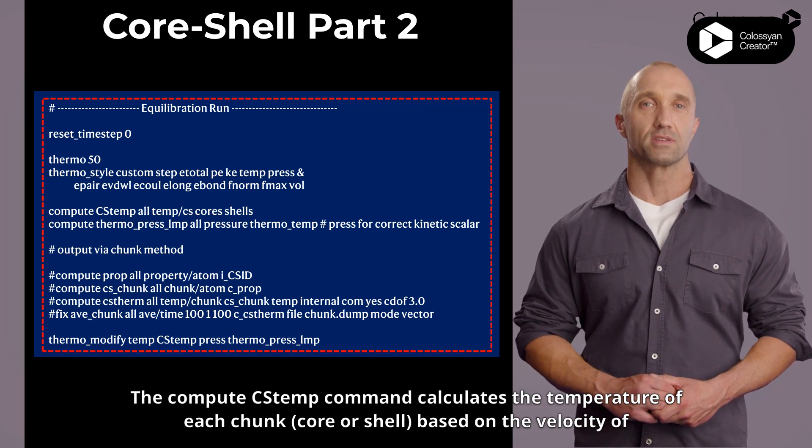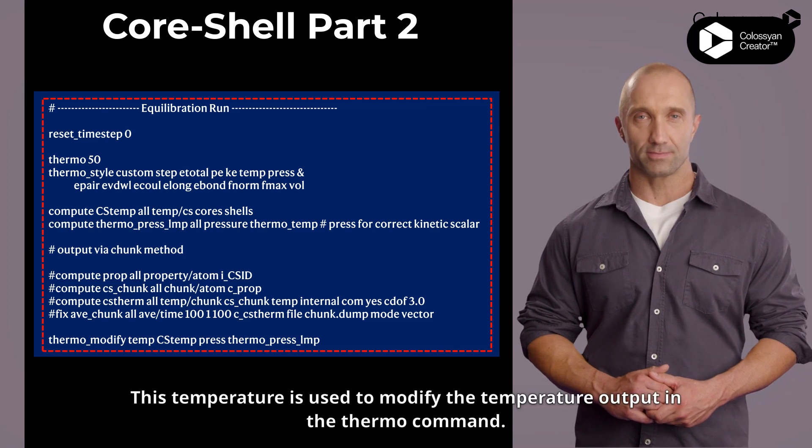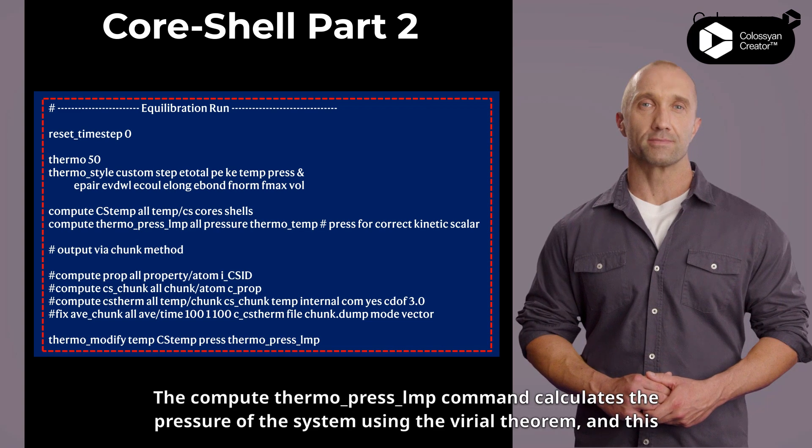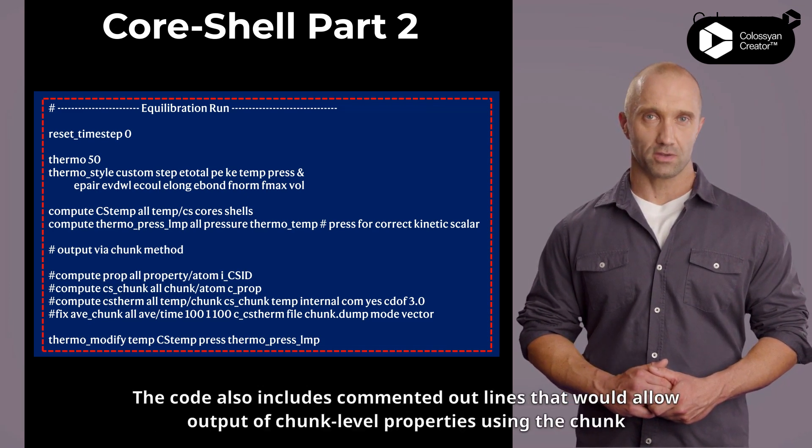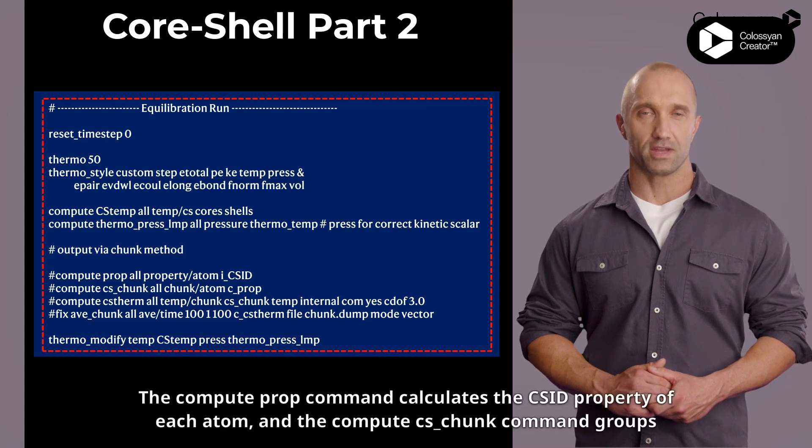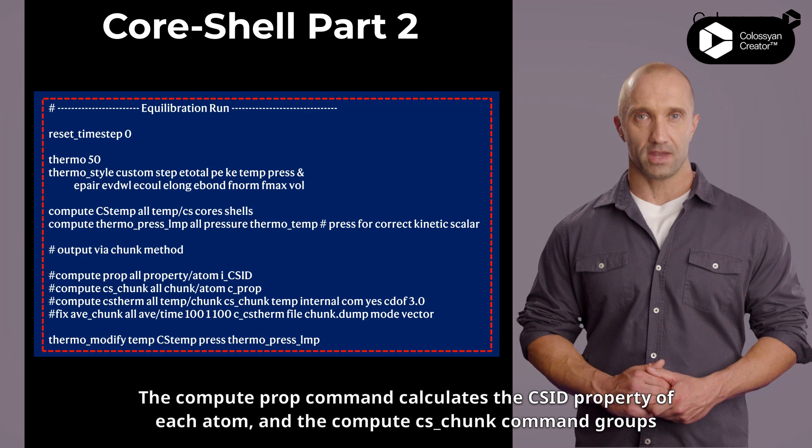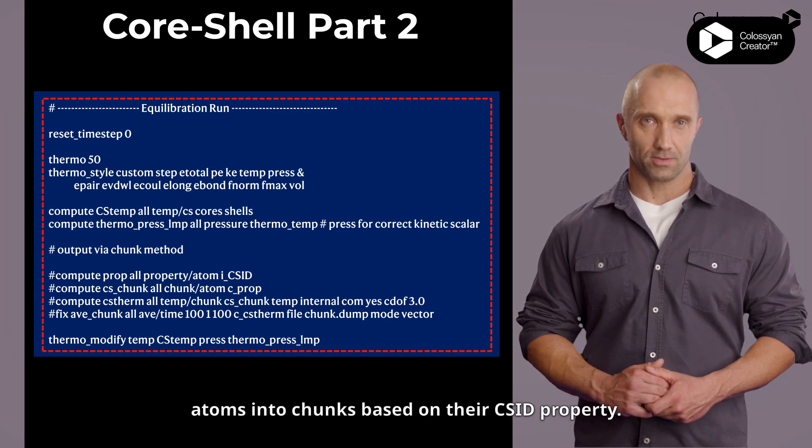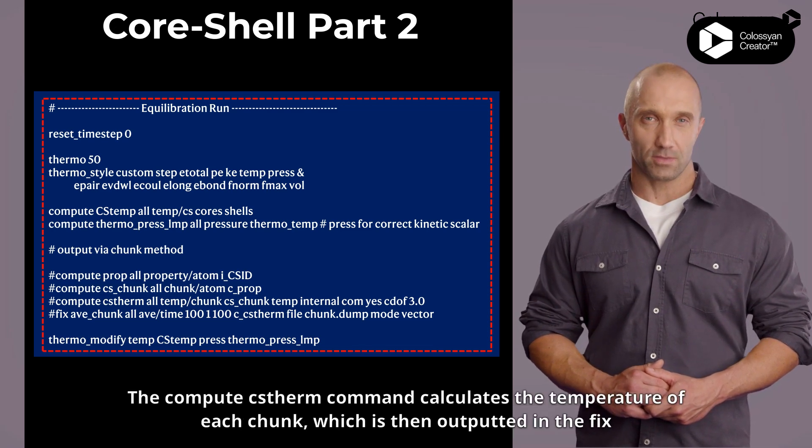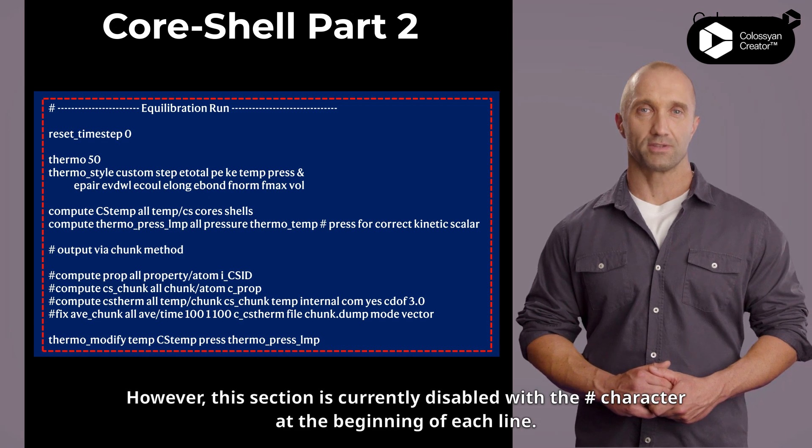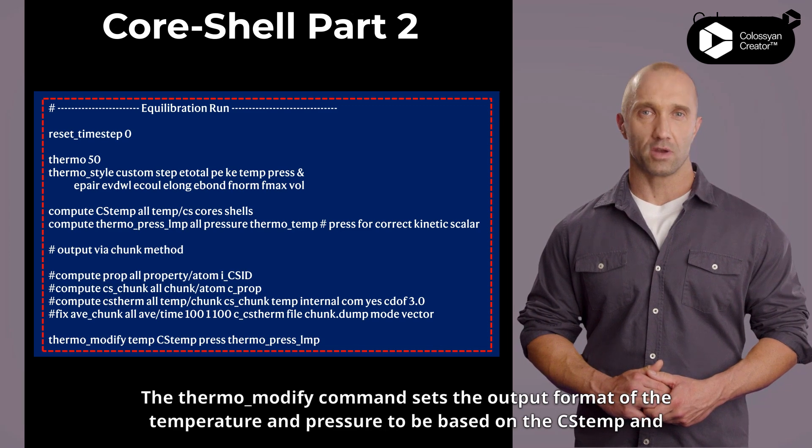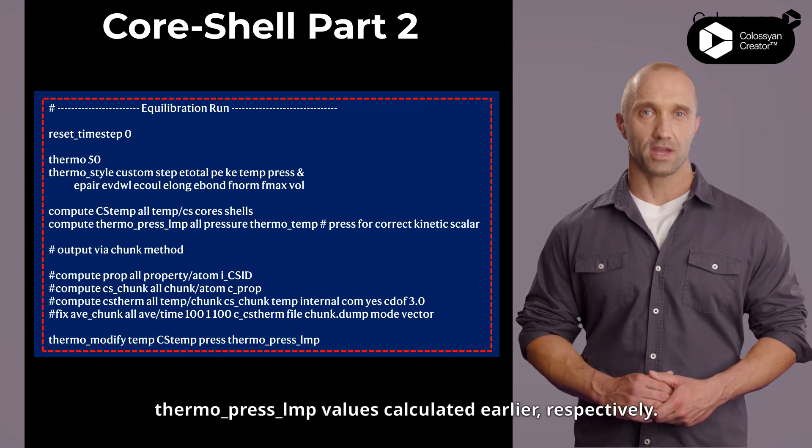The compute c_temp command calculates the temperature of each chunk, core or shell, based on the velocity of its atoms. This temperature is used to modify the temperature output in the thermo command. The compute thermo_press_lmp command calculates the pressure of the system using the virial theorem, and this value is used to modify the pressure output in the thermo command. The code also includes commented out lines that would allow output of chunk-level properties using the chunk method. The compute prop command calculates the csid property of each atom, and the compute cs_chunk command groups atoms into chunks based on their csid property. However, this section is currently disabled with the hashtag character at the beginning of each line. The thermo_modify command sets the output format of the temperature and pressure to be based on the c_temp and thermo_press_lmp values calculated earlier.